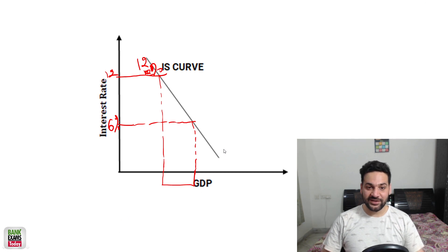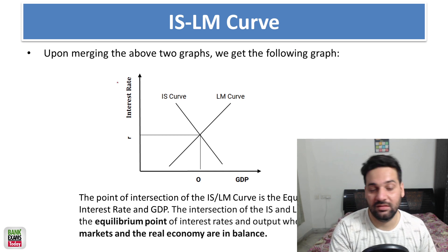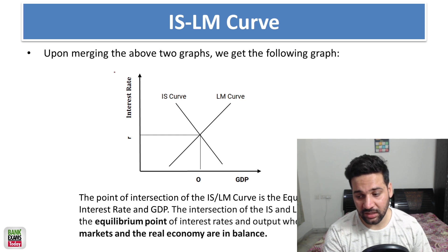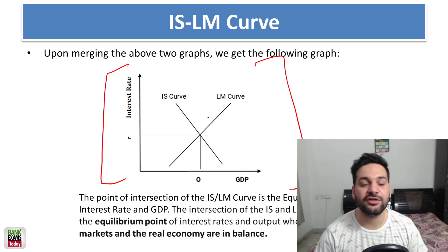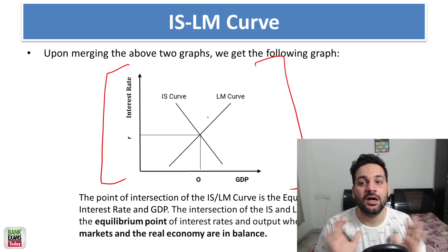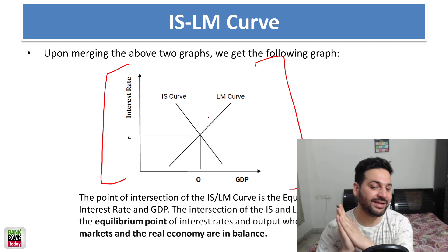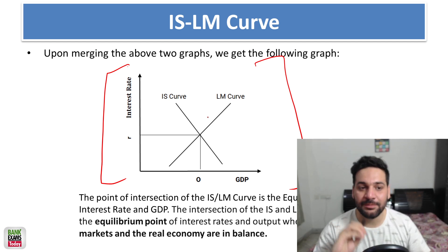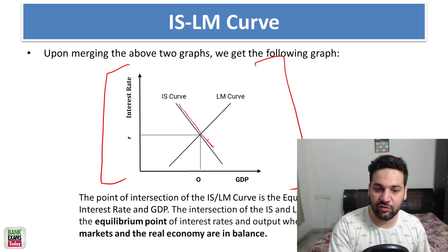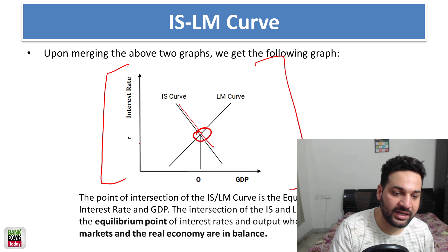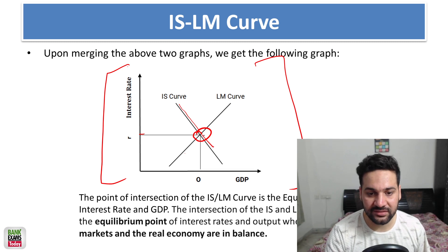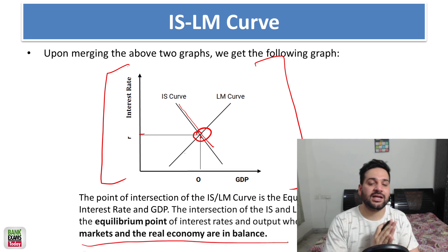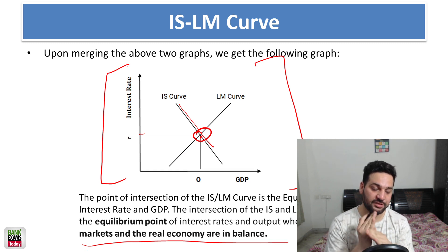Now you might say the IS and LM curves seem conflicting — and yes, that is exactly the point. The central bank, the RBI in our case, needs to find a balance. The IS curve is downward sloping and the LM curve is upward sloping. The point where they intersect is the equilibrium — at that interest rate, GDP is at its ideal level, and the money market and the real economy are in balance.